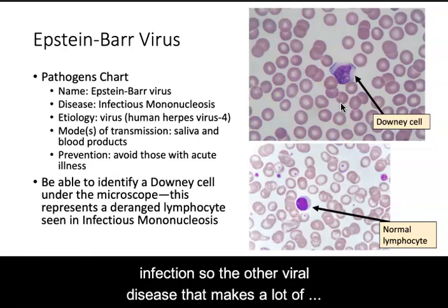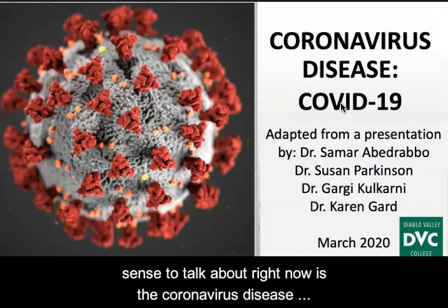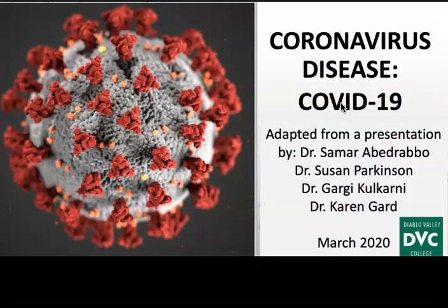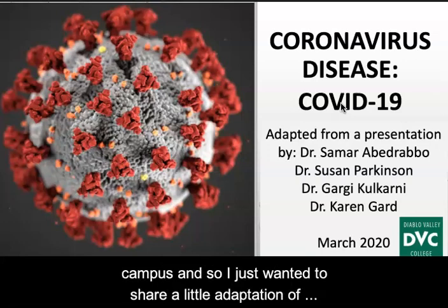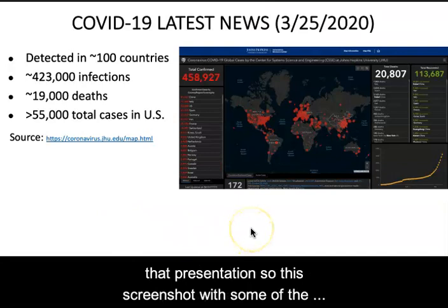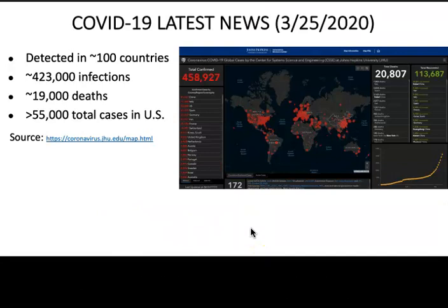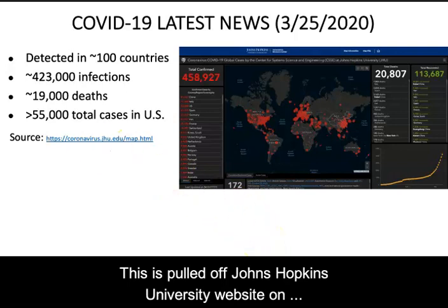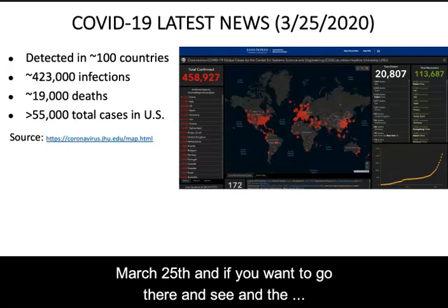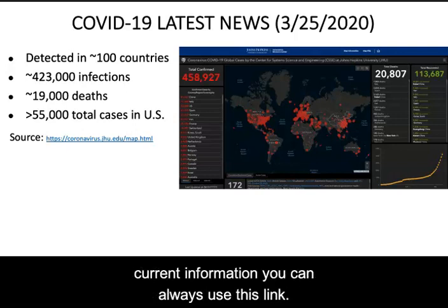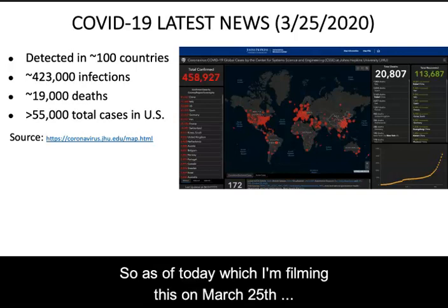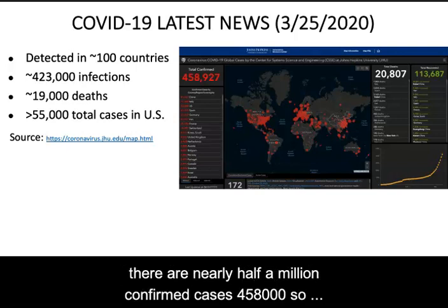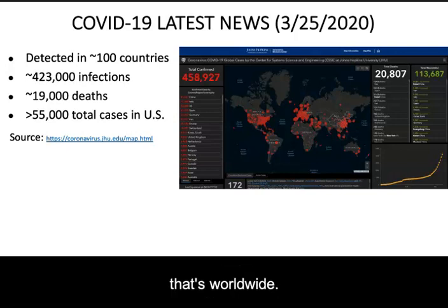The other viral disease that makes a lot of sense to talk about right now is the coronavirus disease that's come to be known as COVID-19. Some of you may be aware that I did a presentation along with some other microbiology faculty to the campus, and so I just wanted to share a little adaptation of that presentation. This screenshot shows some of the latest data that's come out about COVID-19, pulled off the Johns Hopkins University website on March 25th. As of today, there are nearly half a million confirmed cases — 458,000 worldwide.